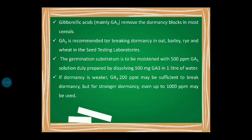If we need to break dormancy, GA3 is recommended. We moisten the germination substratum with 500 ppm of GA3 solution — prepared by dissolving 500 milligrams of GA3 in one liter of water. One milligram in one liter equals one ppm; therefore, 500 milligrams in one liter equals 500 ppm.